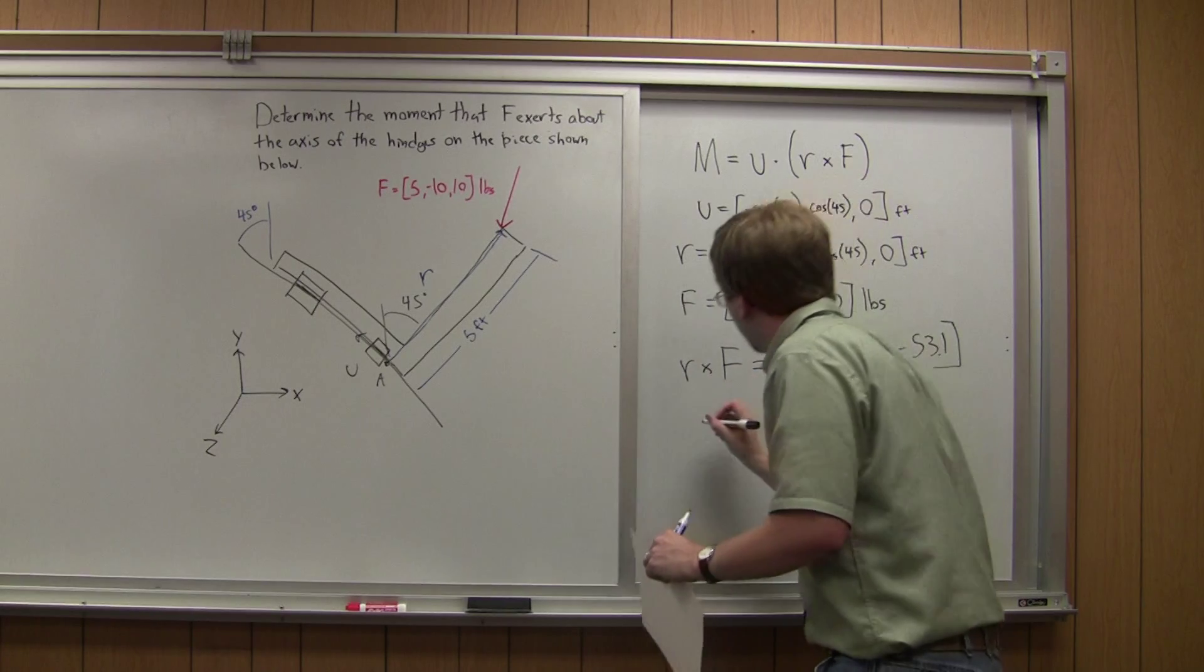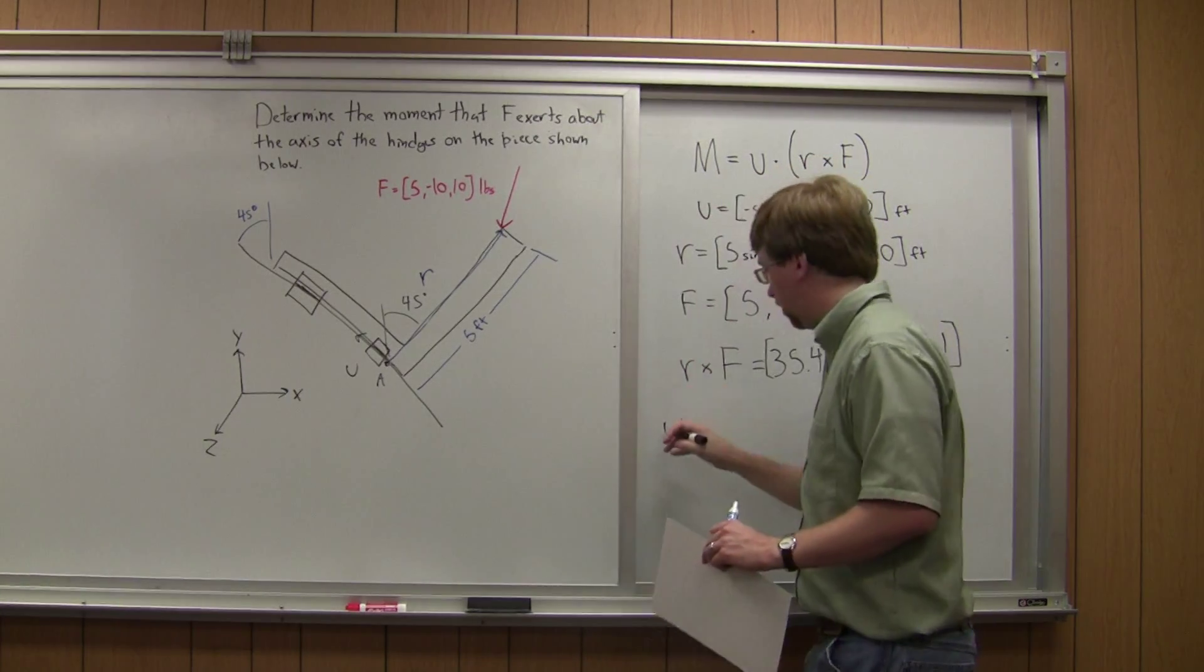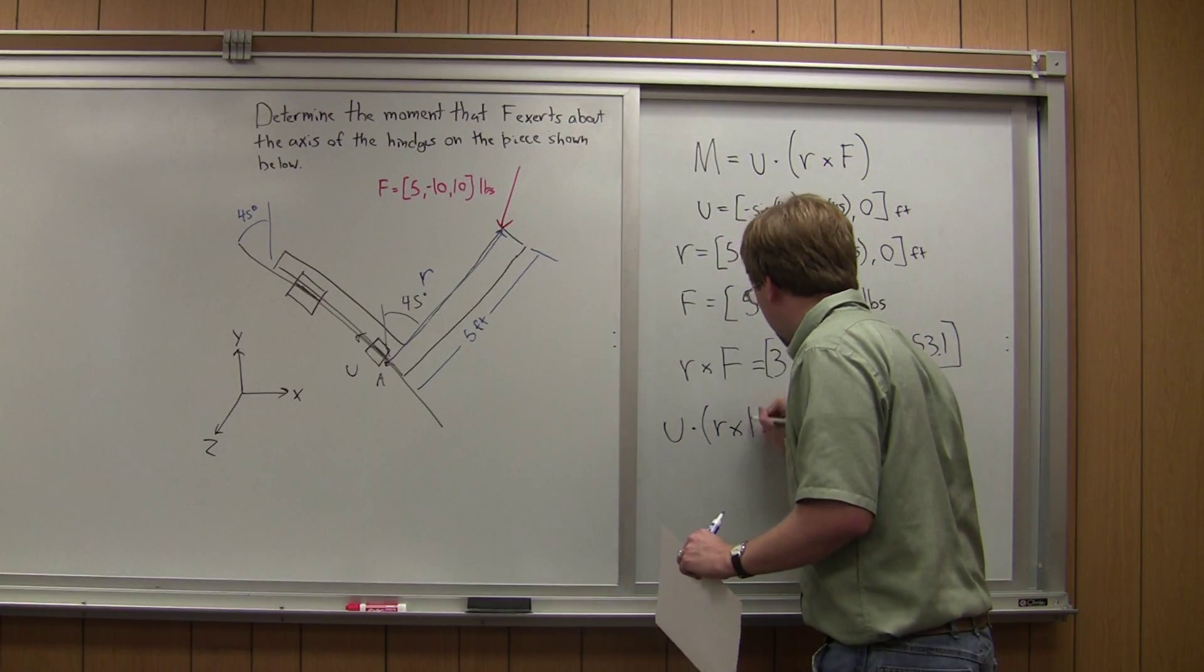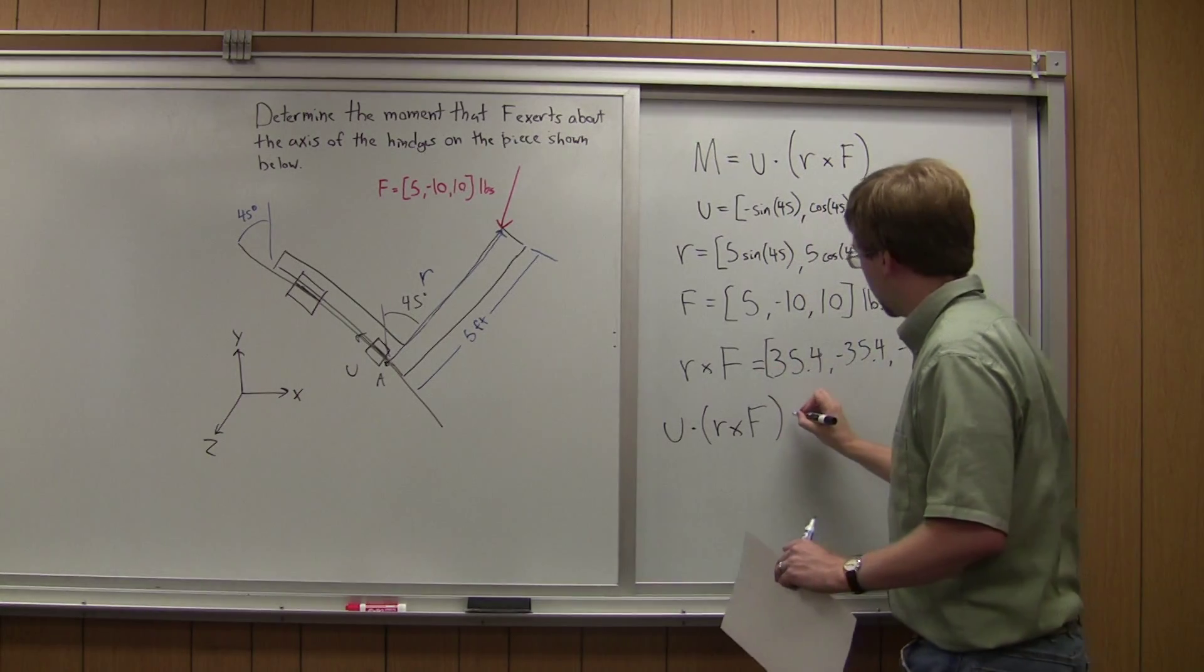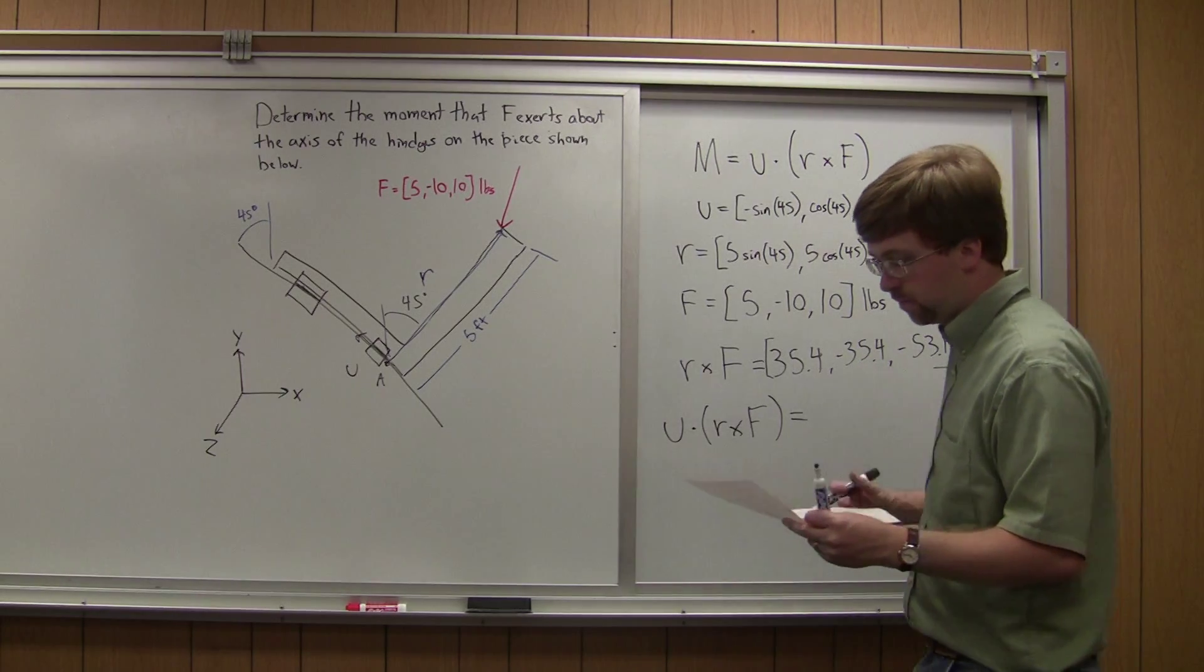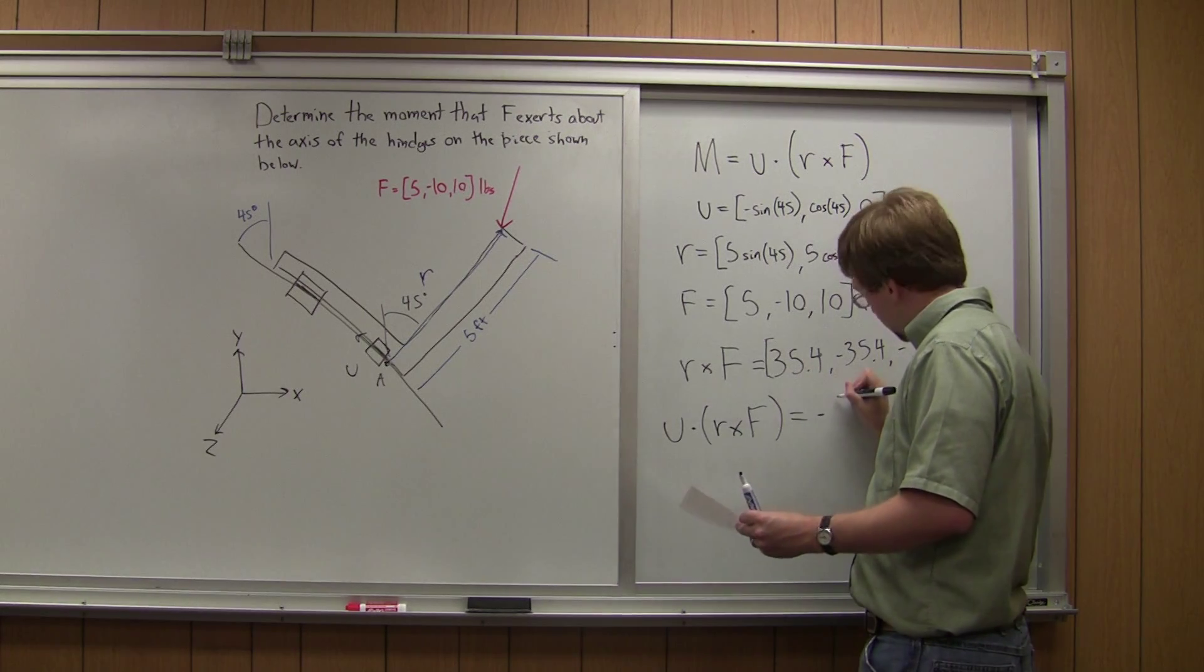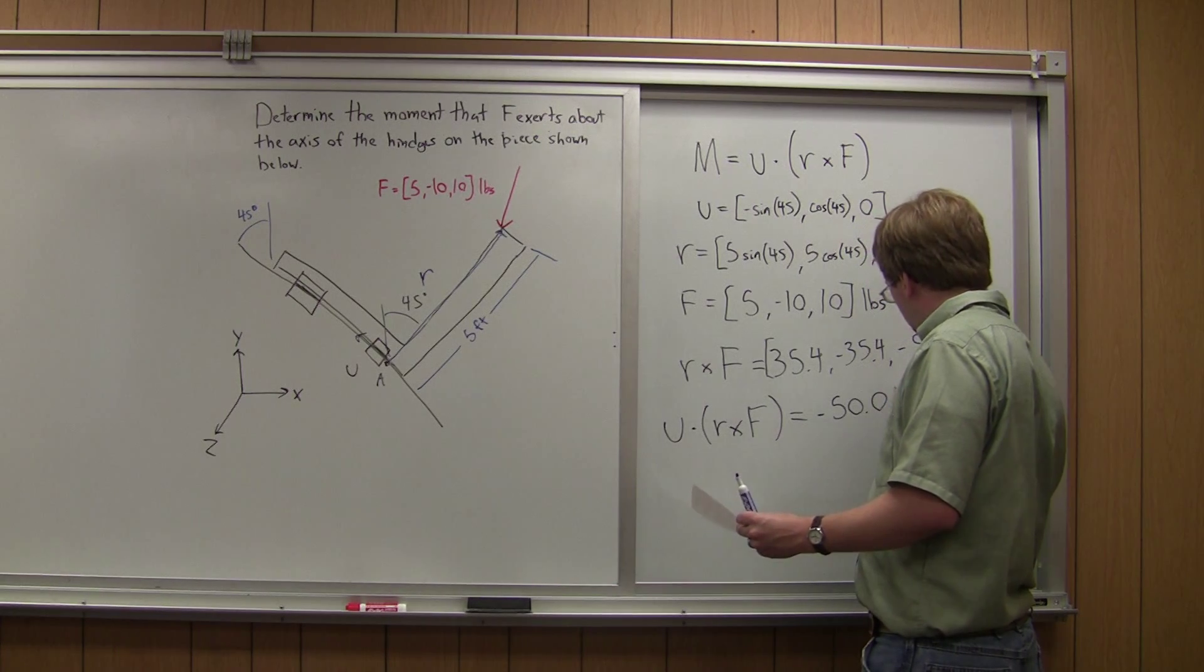And so if we do U, sorry, U dot product of R cross F, which is this vector we found here, we're going to get another, well in this case we're going to get a scalar value. And so the scalar value is going to be equal to negative 50.06,